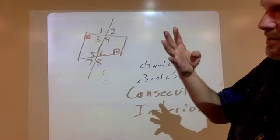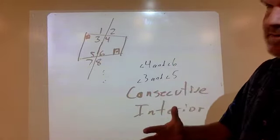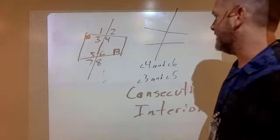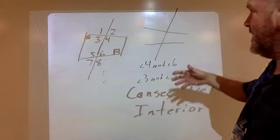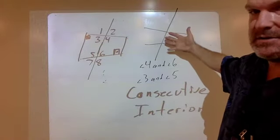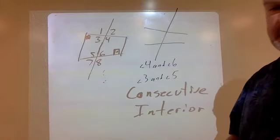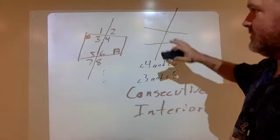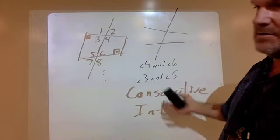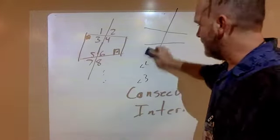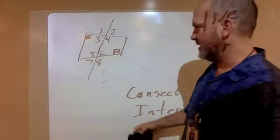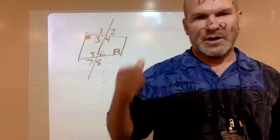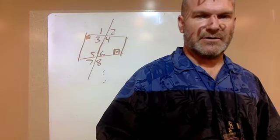Those are the four definitions — the four different pairs of angles you need to remember when two lines are crossed by a transversal. Tomorrow I'm going to explain what happens when those two lines are parallel to each other, and when they are parallel, a lot of these angles will be equal to each other — the same number of degrees. But for today, you just need to recognize your vocabulary: consecutive interior, alternate interior, alternate exterior, and corresponding angles.